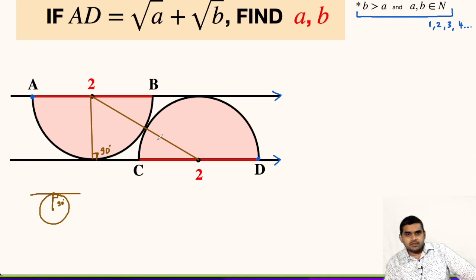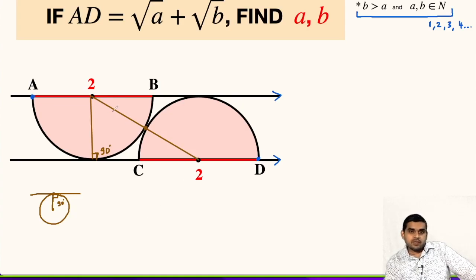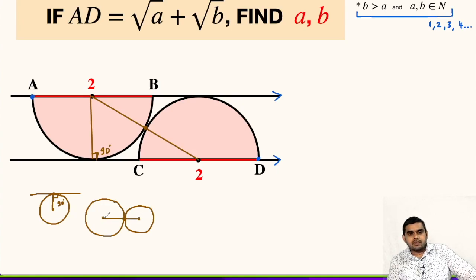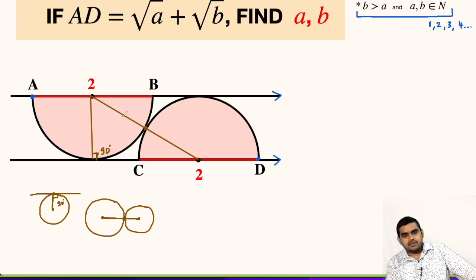Another point to note is that the point of contact shown in the figure is collinear. The reason is another theorem: if there are two circles touching each other externally at a point, then the line segment joining the centers of the two circles passes through that point of contact. Using this property, we get that this point of contact will be collinear.